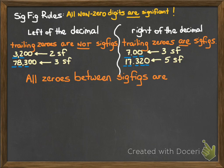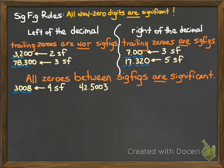We can also say that all zeros between significant figures are significant. An example would be the number 3008. That's actually got four sig figs. The reason is we have significant digits at the beginning and the end — the three and the eight — and that basically brackets in the two zeros in the middle, which become significant to give us a total of four sig figs. How about the number 42.5003? That one's got six sig figs. All of the non-zero digits are significant, but those two zeros bracketed by the five and the three become significant.